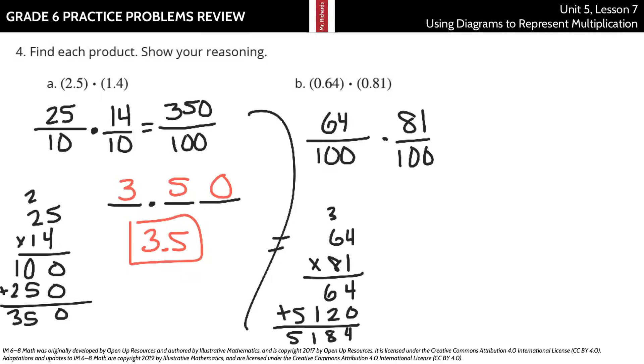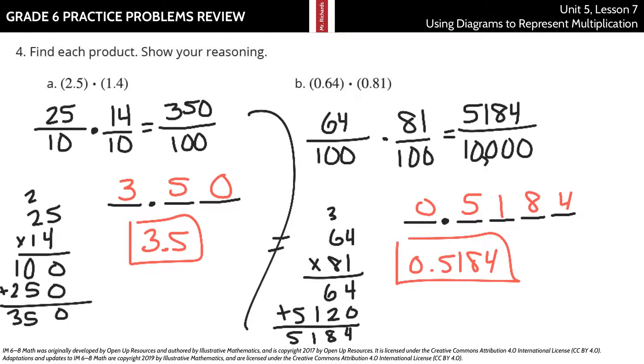5,184 over 100 times 100 is 10,000. And so now we have 0.5184 or 5,184 ten-thousandths. And that's the solution.